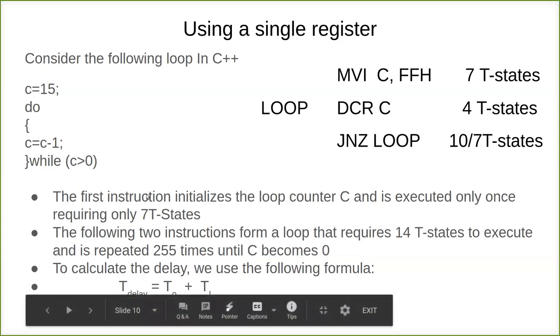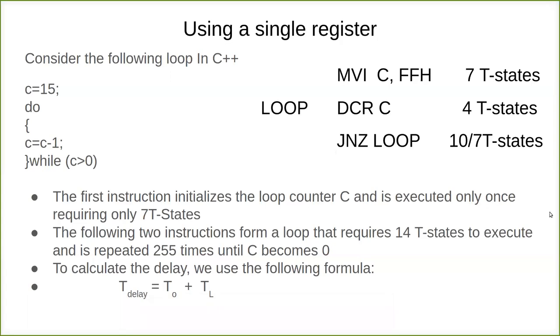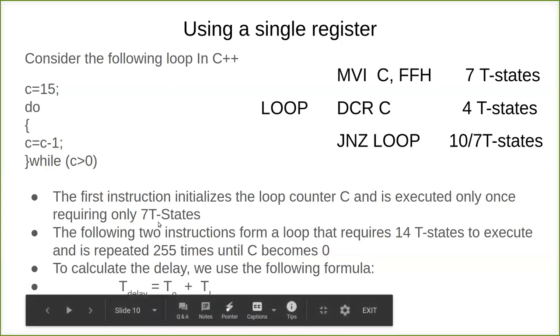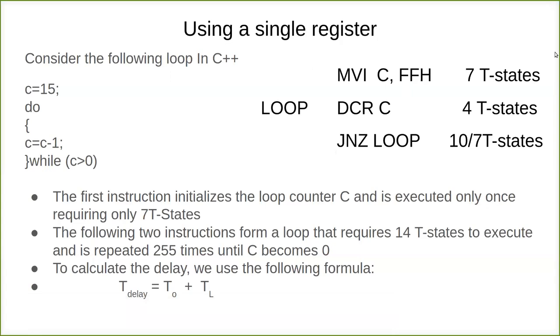The first instruction initializes the loop counter C and is executed only once, requiring only 7 T-states. After that it enters the loop, and only the DCR and JNZ instructions get executed for FFH times.